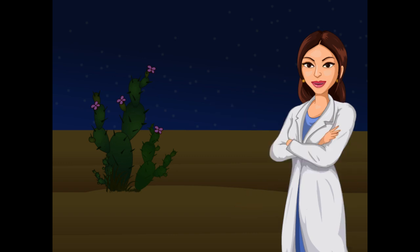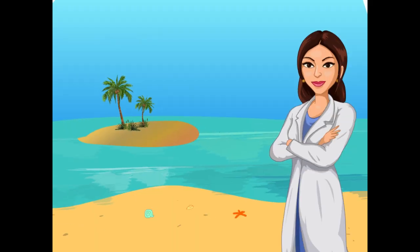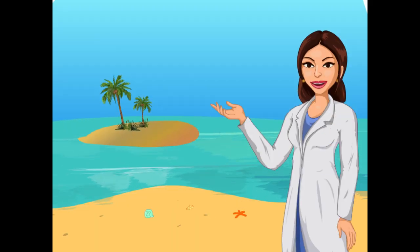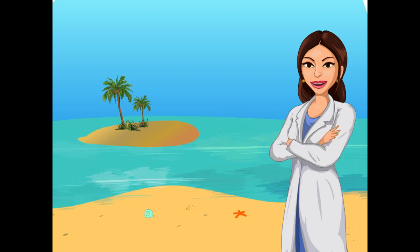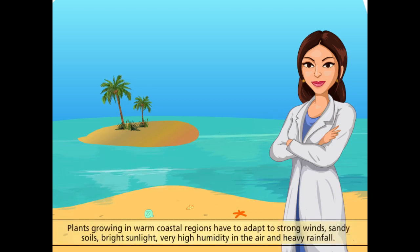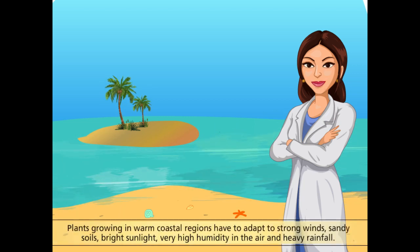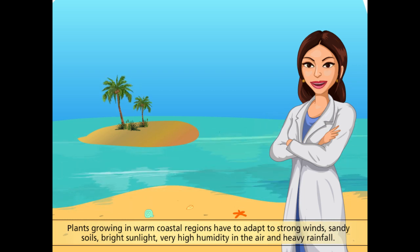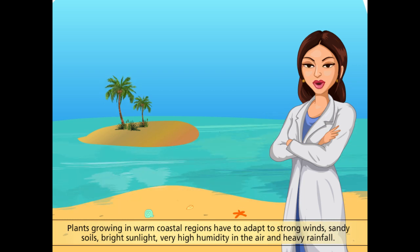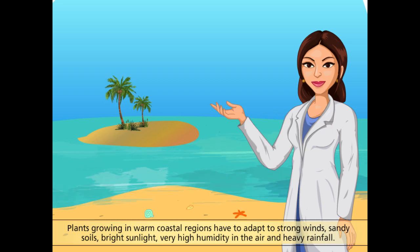Now let us go to a coastal region and find how plants live in the coastal regions. Wow! What a cold breeze! We are in a coastal region. Do you know that the plants growing in warm coastal regions have to adapt to strong winds, sandy soils, bright sunlight, very high humidity in the air and heavy rainfall?